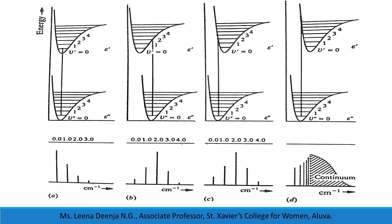In figure B, we can see that the upper electronic energy level's internuclear distance is slightly less than that of the lower electronic energy level. Suppose the molecule is in the V double-dash equal to 0 level. During the transition, according to the Franck-Condon principle, there is no change in internuclear distance, so it will reach the upper vibrational energy level at V dash equal to 2. Here we can see that the 2,0 transition intensity will be maximum. In the spectral lines, we can see that the 2,0 spectral line will be of maximum intensity.